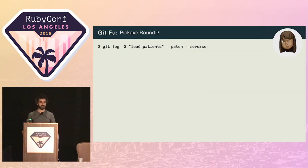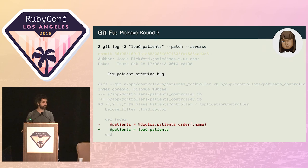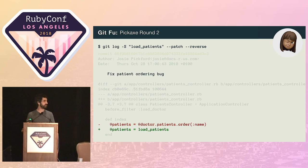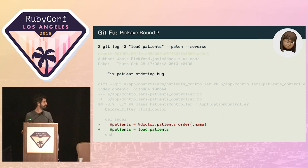So she calls the pickaxe again, this time searching for load_patients. It feels like we're getting somewhere. Up until this point, the code was performing a sort in the database query. And this is the very first commit that used an in-memory sort. The commit message mentions something about an ordering bug, so it looks like it was an intentional choice. But there's still no clue as to what caused the bug or why this would have fixed it.